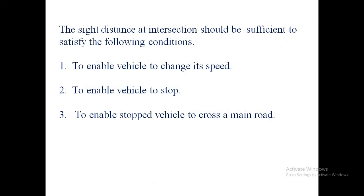Coming to the second condition: enabling an approaching vehicle to stop. The sight distance for the approaching vehicle should be sufficient to bring either one or both vehicles to a stop before reaching the point of collision. When travelling towards the junction point, we need sufficient space to avoid or overcome the collision. The two sides AC and BC of the sight triangle should each be equal to the safe stopping distance.